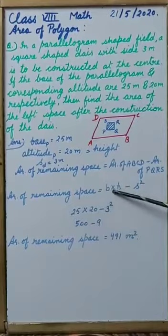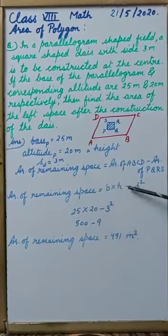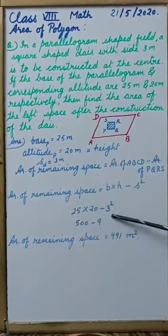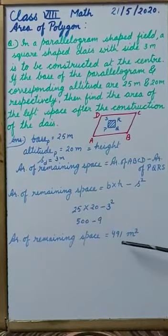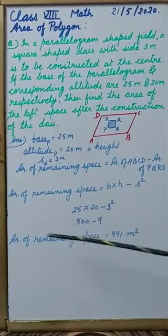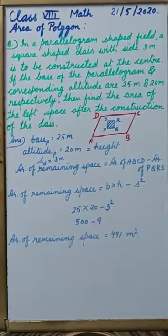Base is 25 into height is 20 minus side is 3, so 3 square. When we solve it, it will be 491 meter square. That will be area of remaining space.